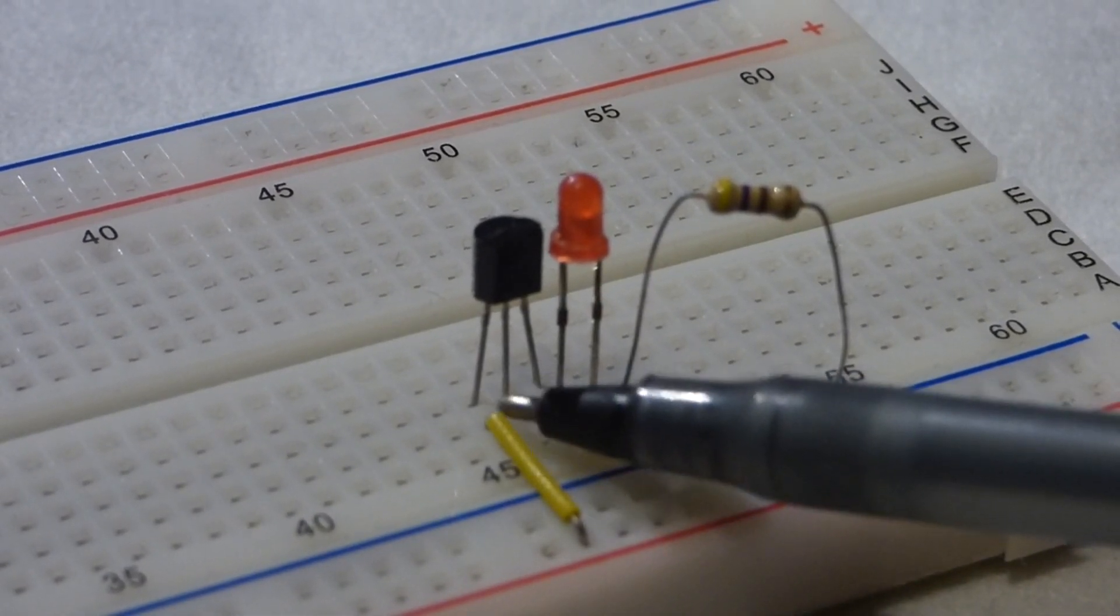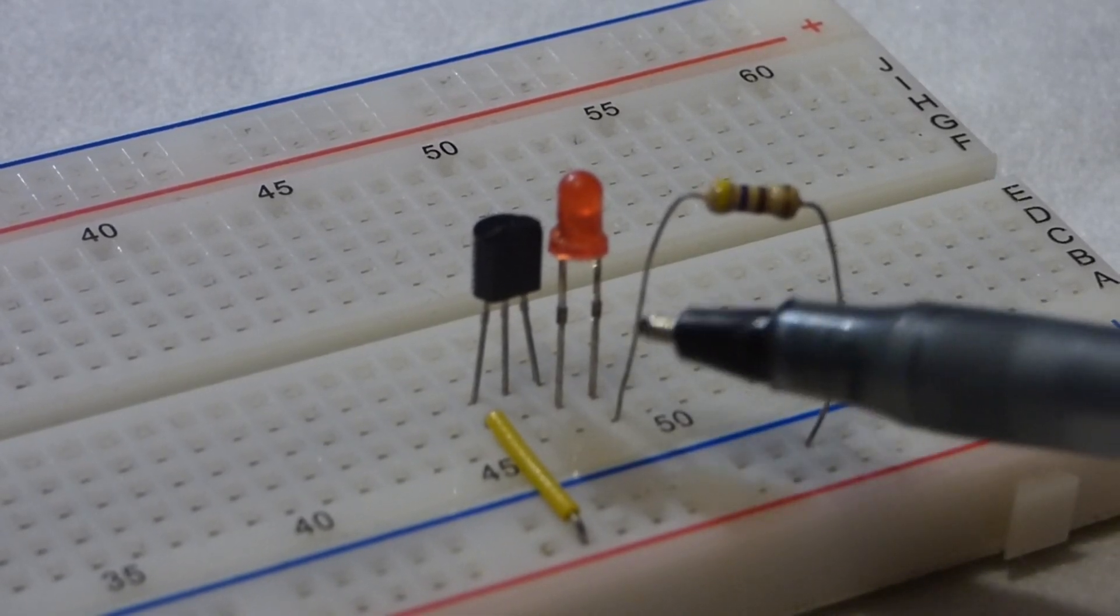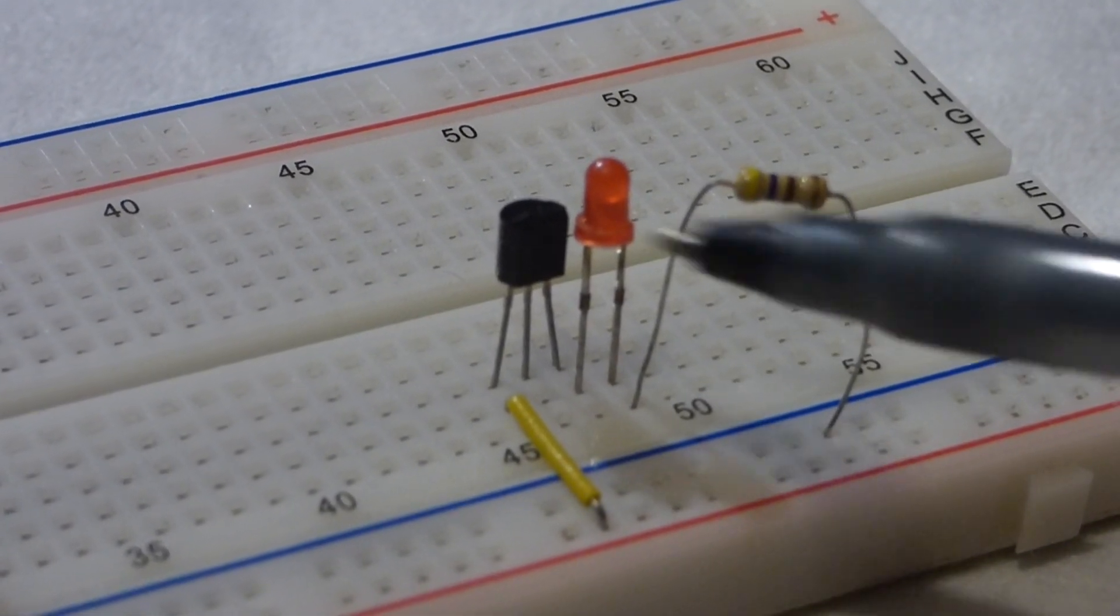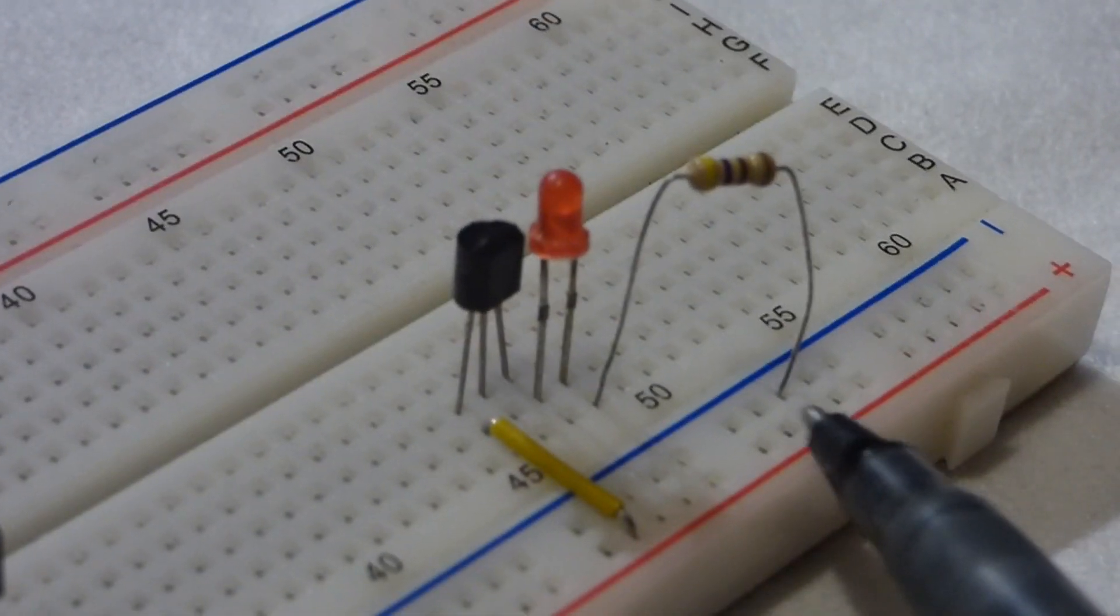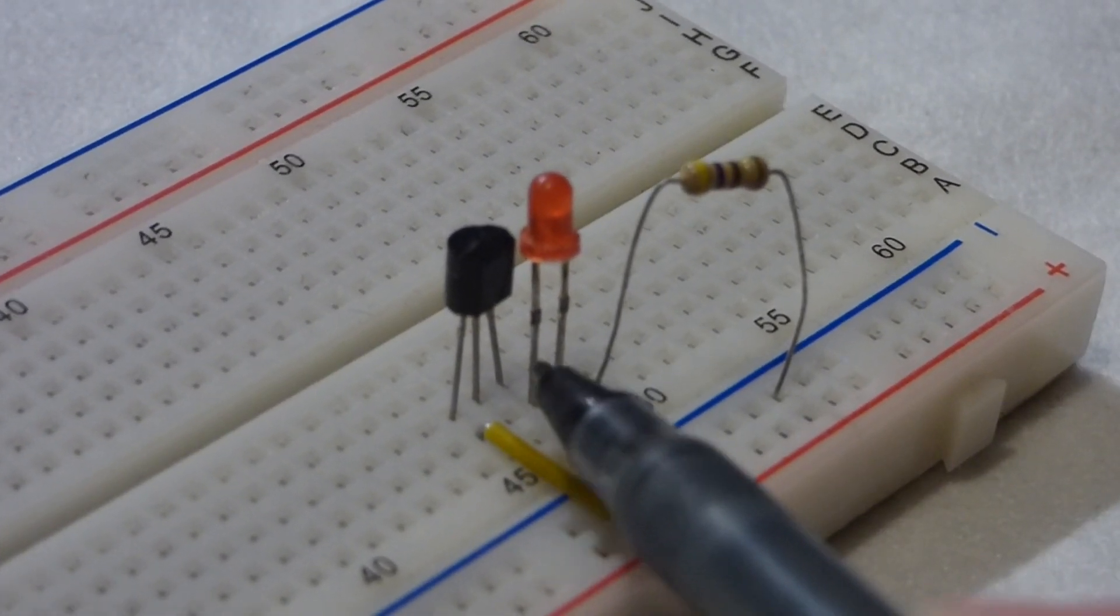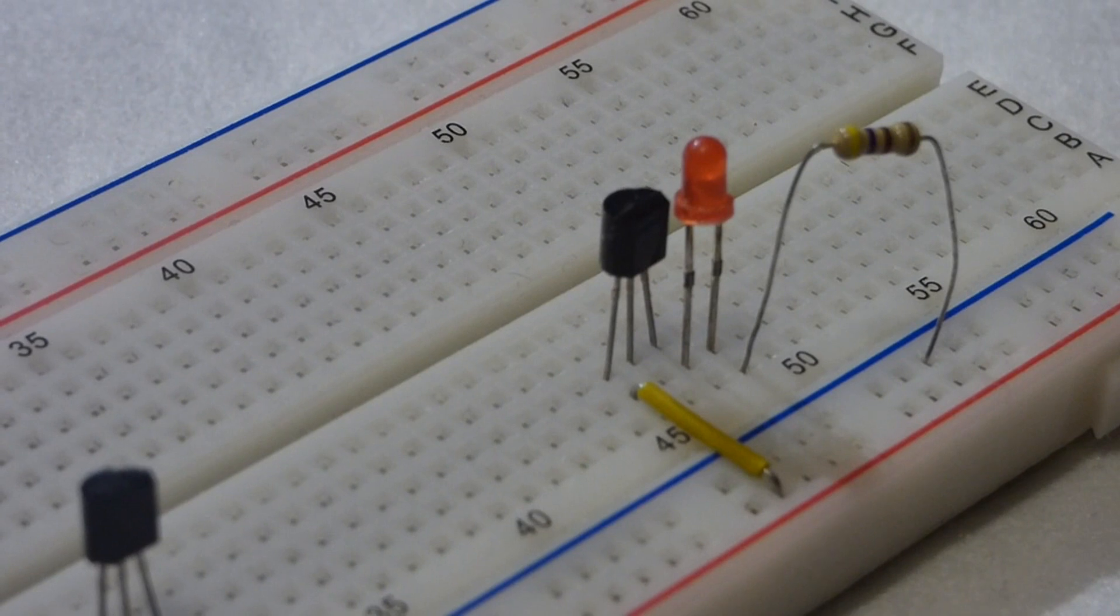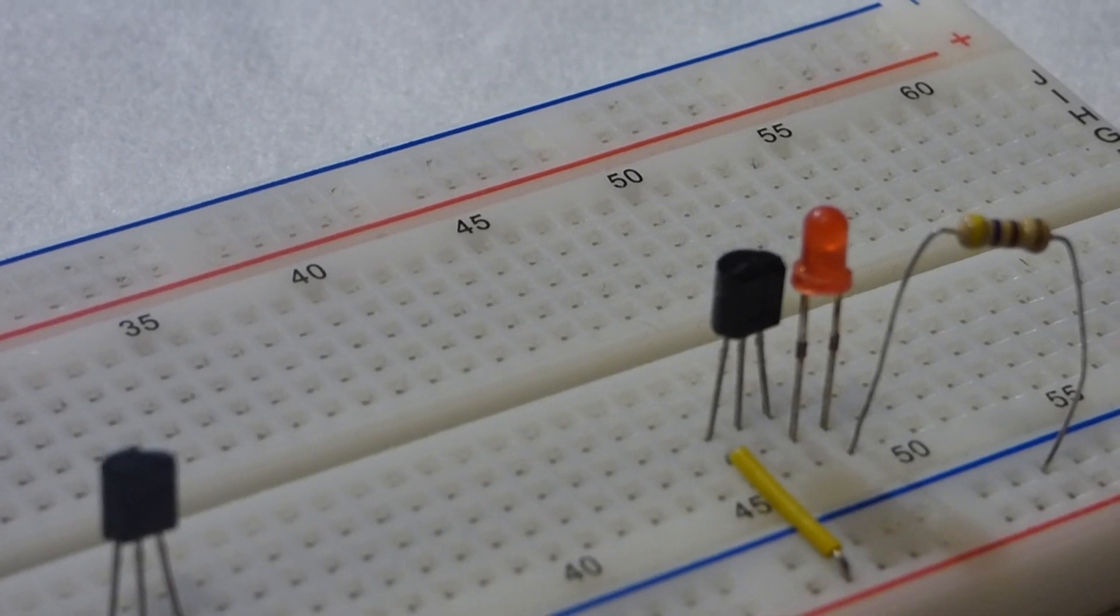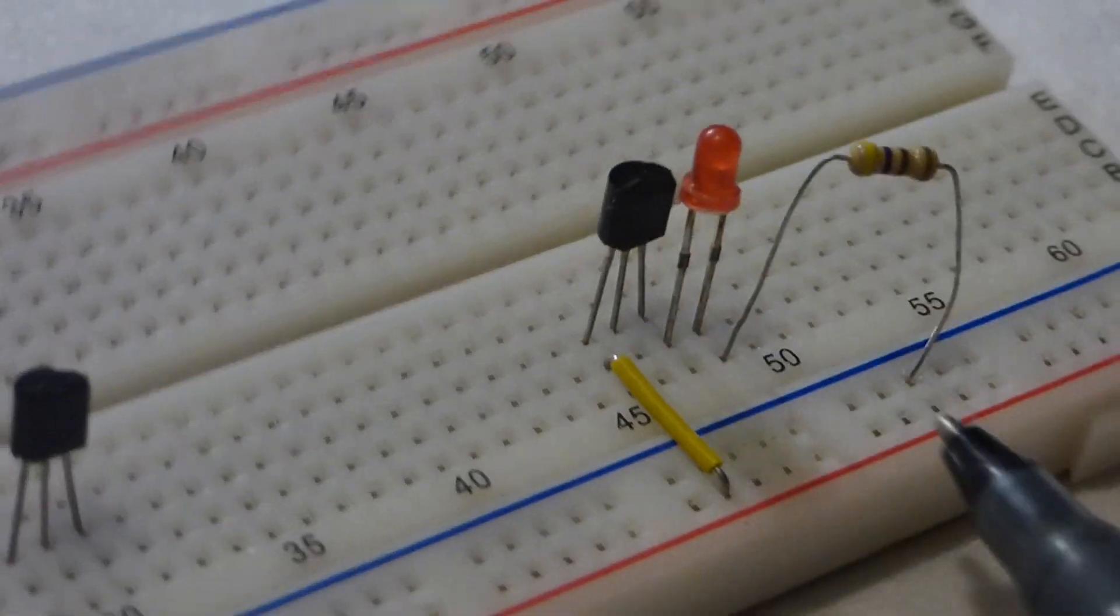The PNP transistor, on the other hand, has the more positive side of the circuit to the emitter and the more negative side of the circuit towards the collector. So, now, I also turn the LED around because now, negative is above positive. So, I need the cathode, the shorter lead on this side and the anode, the longer lead towards the more positive side. So, as you can see, this is still the same circuit except for, instead of an NPN transistor, we're wiring it to a PNP transistor. So, the polarities switch.